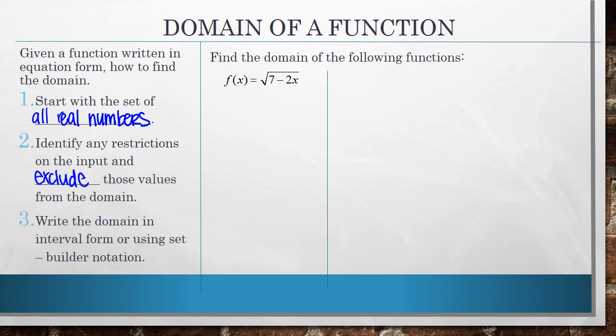Remember, whenever you have a root with an even index. So if you're taking the square root, the fourth root, the sixth root, the eighth root, etc. We cannot take the square root or again a root of even index of a negative number. So whatever you're taking the root of must be bigger than or equal to 0. Again, we have to exclude any values that are going to make this negative because it's not going to be defined. If I try to take the square root of negative 4, there's no solution.